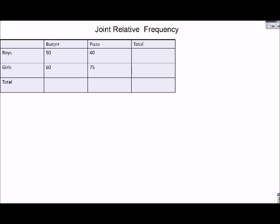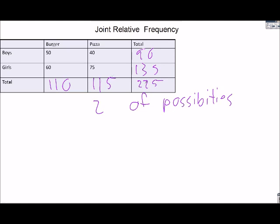So let's look at an example of joint relative frequency. Joint means two categories and relative means of all possibilities. So the first thing we have to do is figure out how many total people do we have. And the way I'm going to do that is just add across: 90, 135, and then adding down I get 225. Well if I go the other direction I should still get 225. So I should get 110, 115, add those across I still get 225.